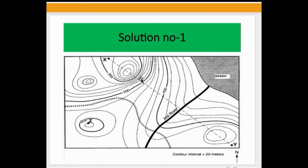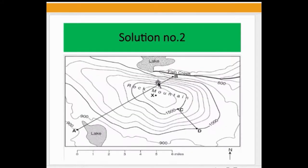In this topographic map, the contour lines here are very close together, so the slope is very steep in this area. In this other area, the contour lines are very wide apart, so this is the flat area.